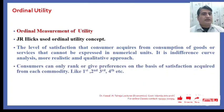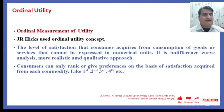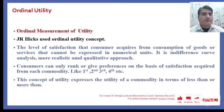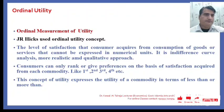Under ordinal measurement of utility, the consumer can rank or give preferences on the basis of satisfaction acquired from each commodity — like first, second, third, fourth, and so on. The concept expresses the utility of a commodity in terms of less than or more than.